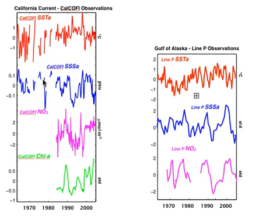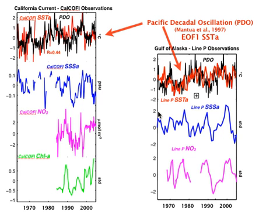Here are the California Current observations: time series of sea surface temperature, sea surface salinity, nutrients at 150 meters, and chlorophyll integrated in the upper ocean. And here is the equivalent for the Gulf of Alaska. If we compare the sea surface temperatures with the PDO index, they are very well correlated — by construction, since the PDO is defined as the dominant mode, EOF1, of sea surface temperature. However, if we compare the PDO index with the other time series, we find almost no correlation.